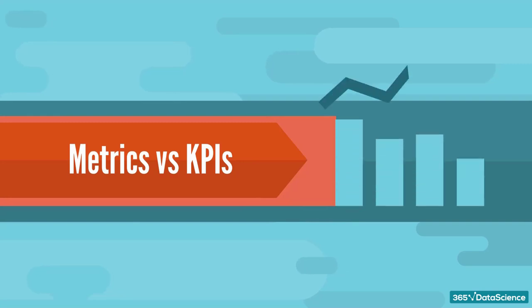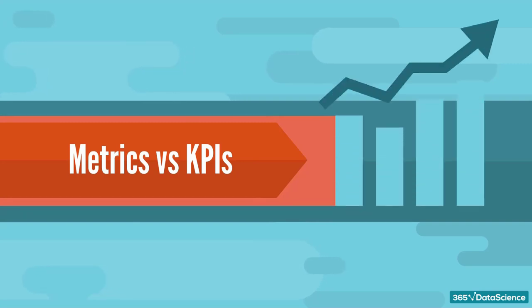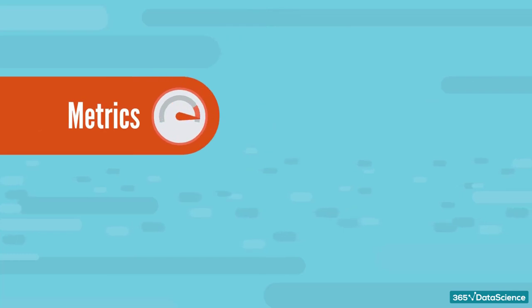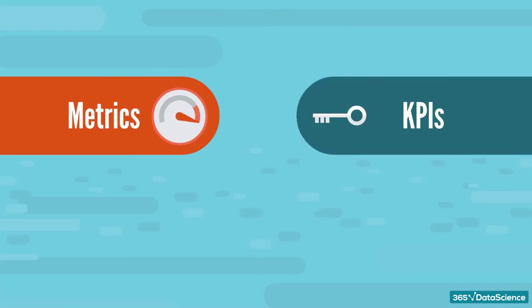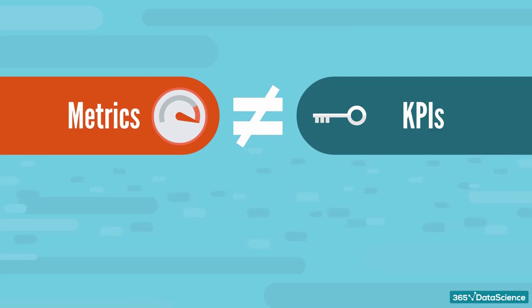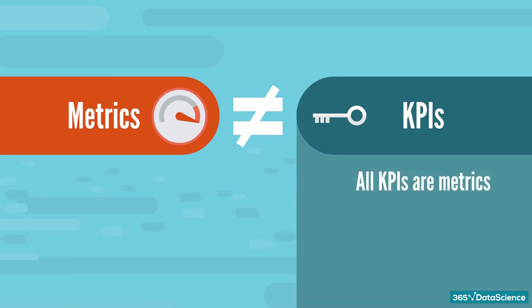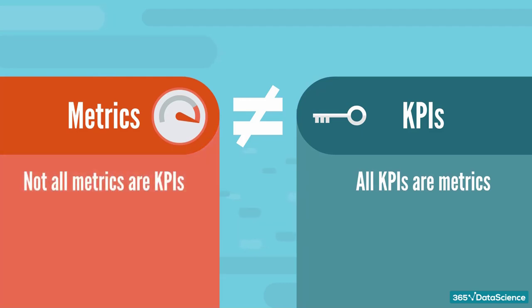We need to consider an important terminology distinction. In literature, the terms metrics and KPIs are often used interchangeably. This is not always correct. Please remember the following: all key performance indicators, KPIs, are metrics, but not all metrics are KPIs.